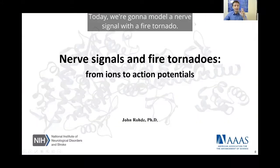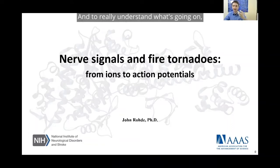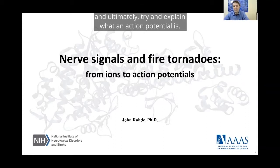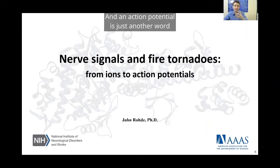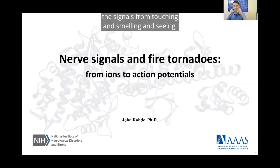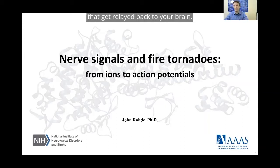Today we're going to model a nerve signal with a fire tornado. To really understand what's going on, we're going to talk about ions, connect things like voltage to pressure, and ultimately explain what an action potential is. An action potential is just another word for the nerve signals that help your brain control your limbs and help you sense the world around you—the signals from touching, smelling, and seeing that relay back to your brain.